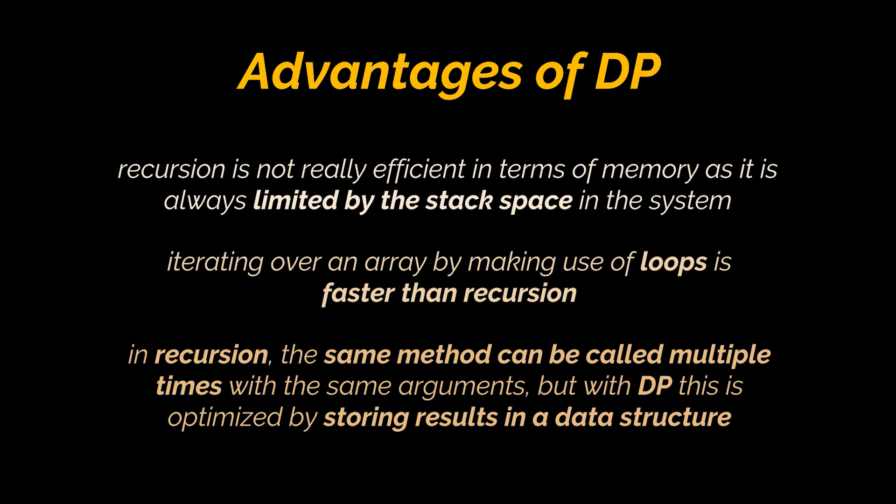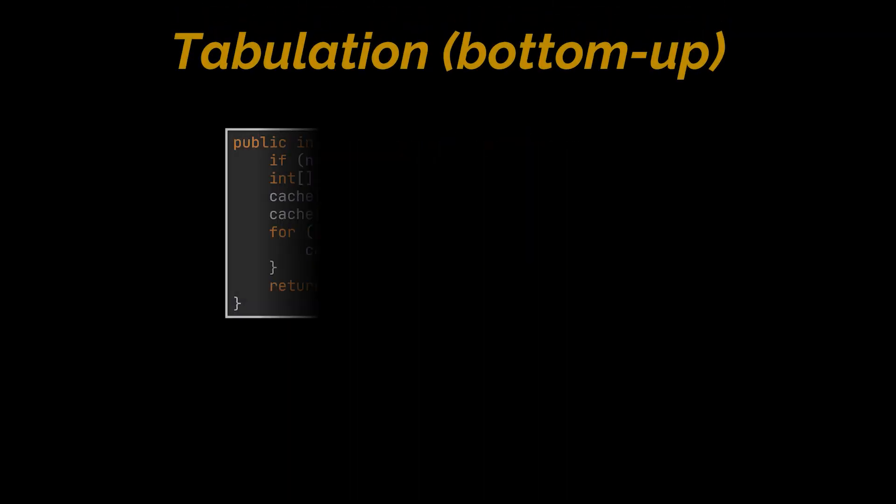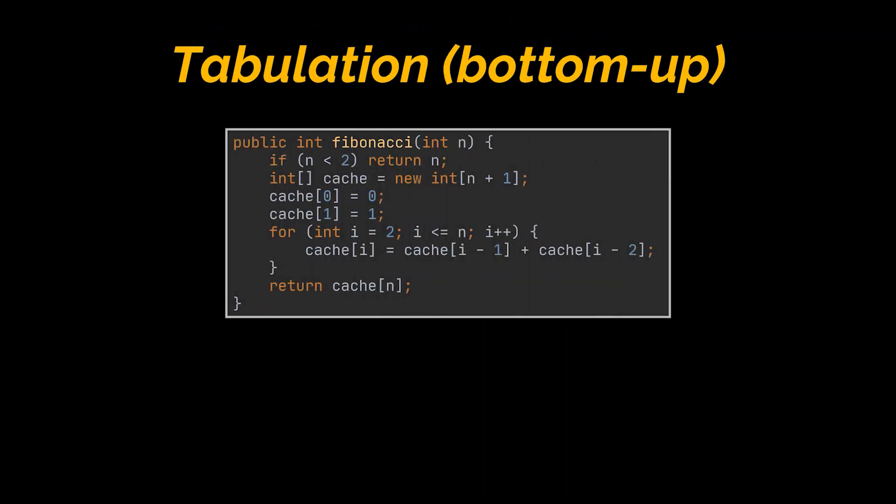In dynamic programming, a recursive method is optimized by storing the intermediate results in a data structure. With that said, you should know that DP mainly provides two approaches to solve a recursive problem: tabulation and memoization. Let's break them down.